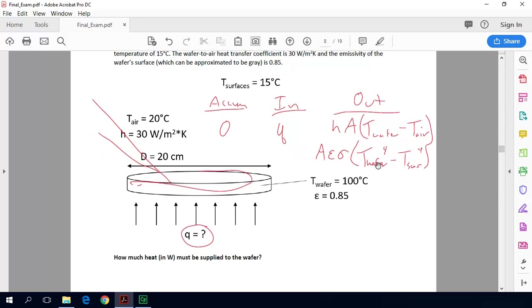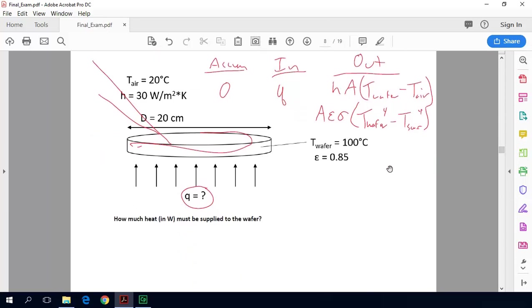So now we just put our energy balance together, and basically this is just in equals out, because it's at steady state, we don't have accumulation. I didn't put generation on here either, there's no generation in this problem. So putting in our in equals out terms, we don't have to subtract these problems off, because we're just going to put them on separate sides of the equation anyway.